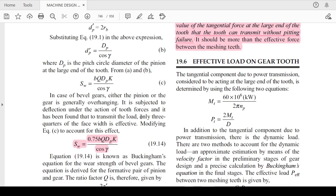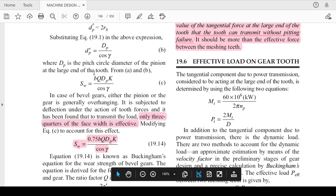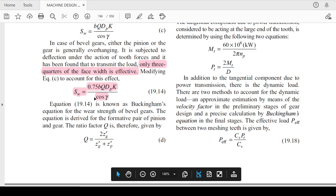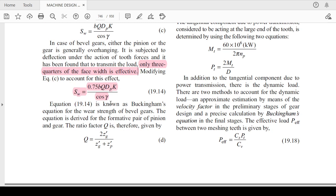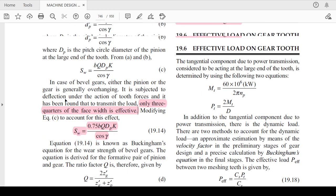It can be found that when transmitting the load, only three-quarter of the face width is effective. That's why instead of taking the whole face width, they have rewritten it as 0.75 of b. Rest all formulas are the same. We will take this particular formula as the final formula for the calculation of the wear strength.